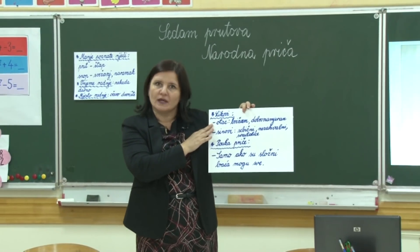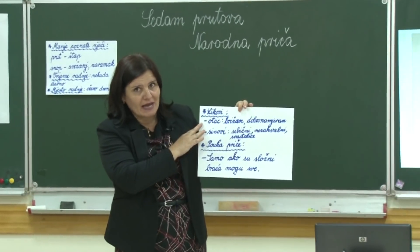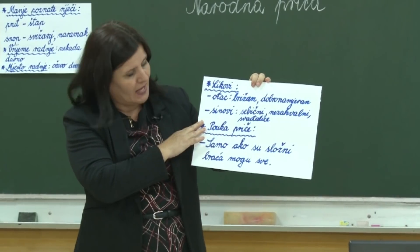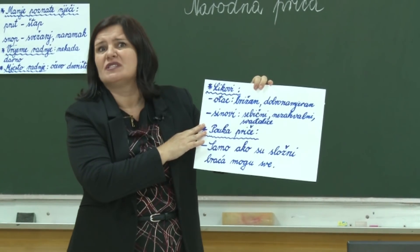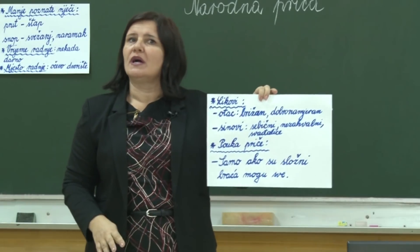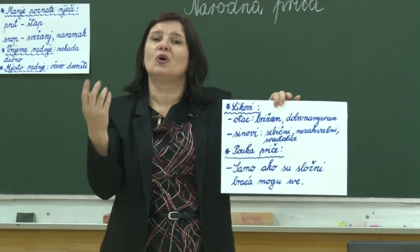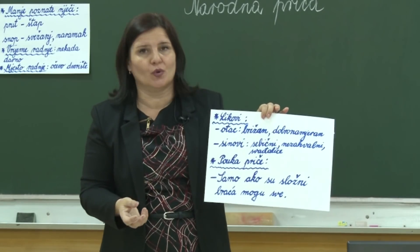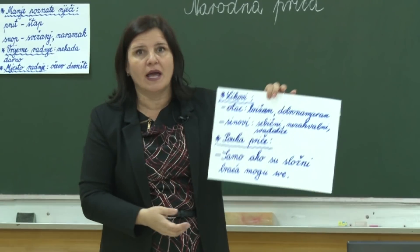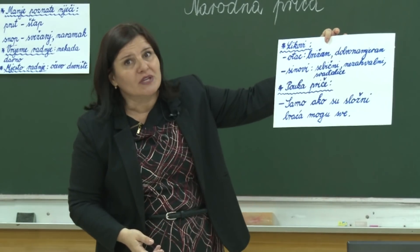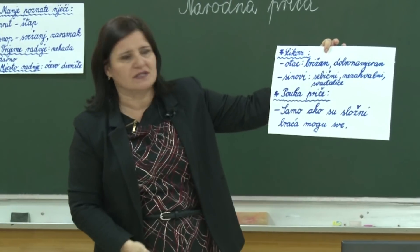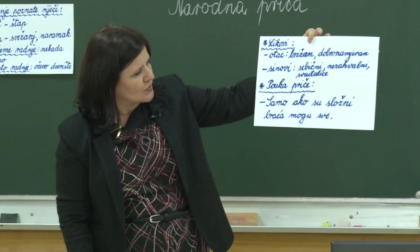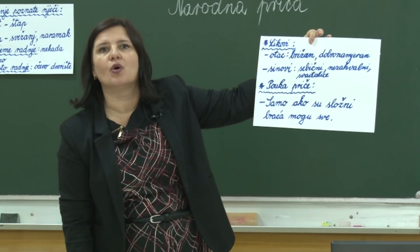Likovi: otac — brižan, dobronamjeran. Sinovi — sebični, nezahvalni. I koja bi bila poruka ove naše priče? Iz svake priče možemo izvući tu neku poruku koju možemo iskoristiti u svom životu. Poruka: samo ako su složni, braća mogu sve.